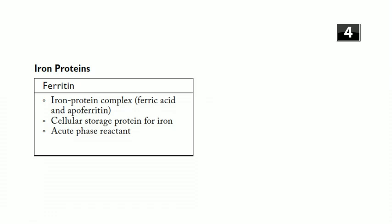Now let's talk about iron proteins involved in storing and transporting iron. Ferritin is an iron-protein complex of ferric acid and apoaperitin — it's the cellular storage form of iron. Ferritin is found in high concentrations in hepatocytes. It's also an acute phase reactant: during inflammation, hepatocytes release more ferritin to bind up iron, starving bacteria of it as a defense mechanism.